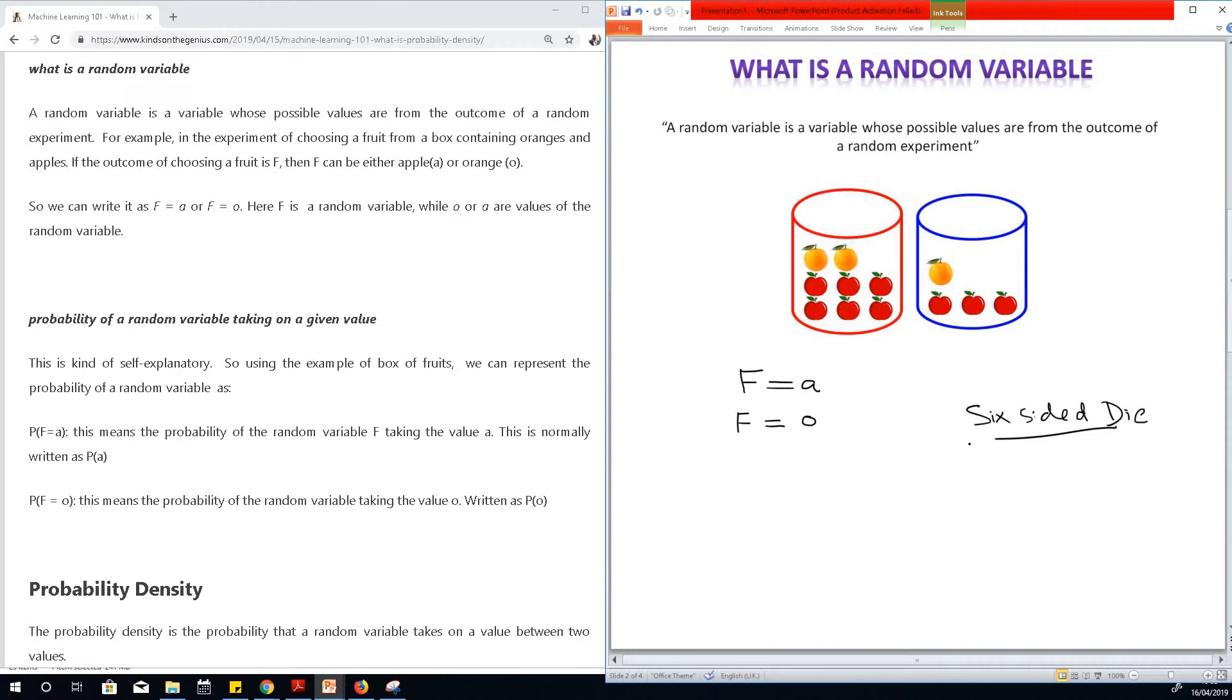So if we call the random variable in this case s, which is the side that shows up, s could either take a value of 1, it could take a value of 2, it could take a value of 3, it could take a value of 4, 5, or 6.